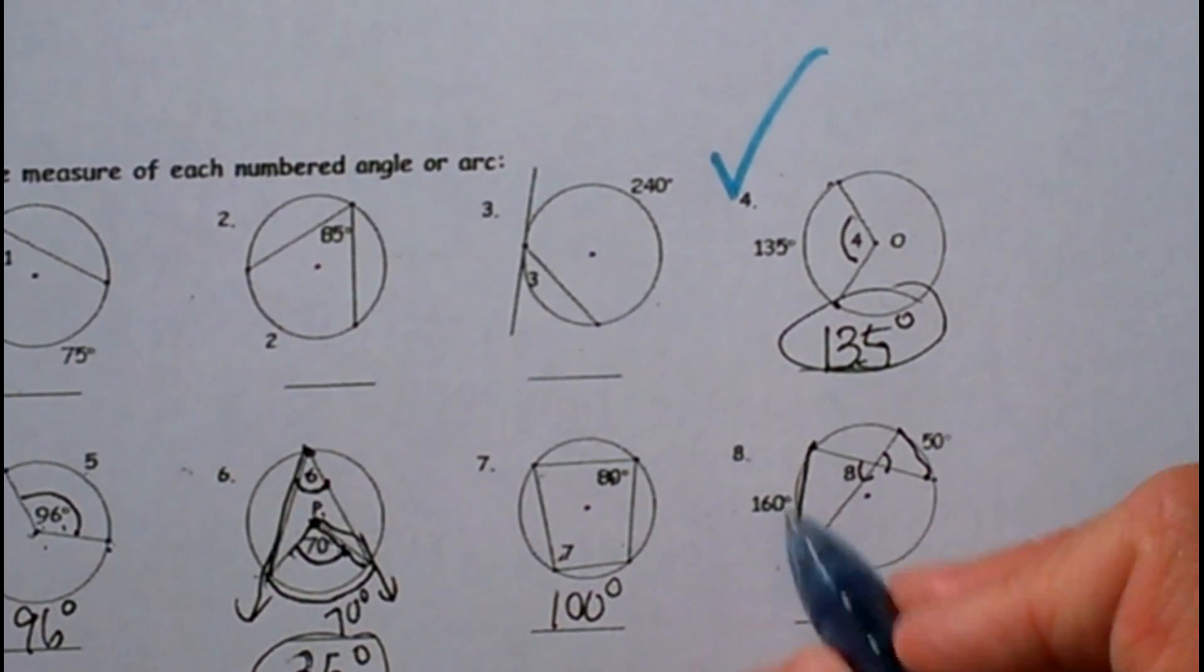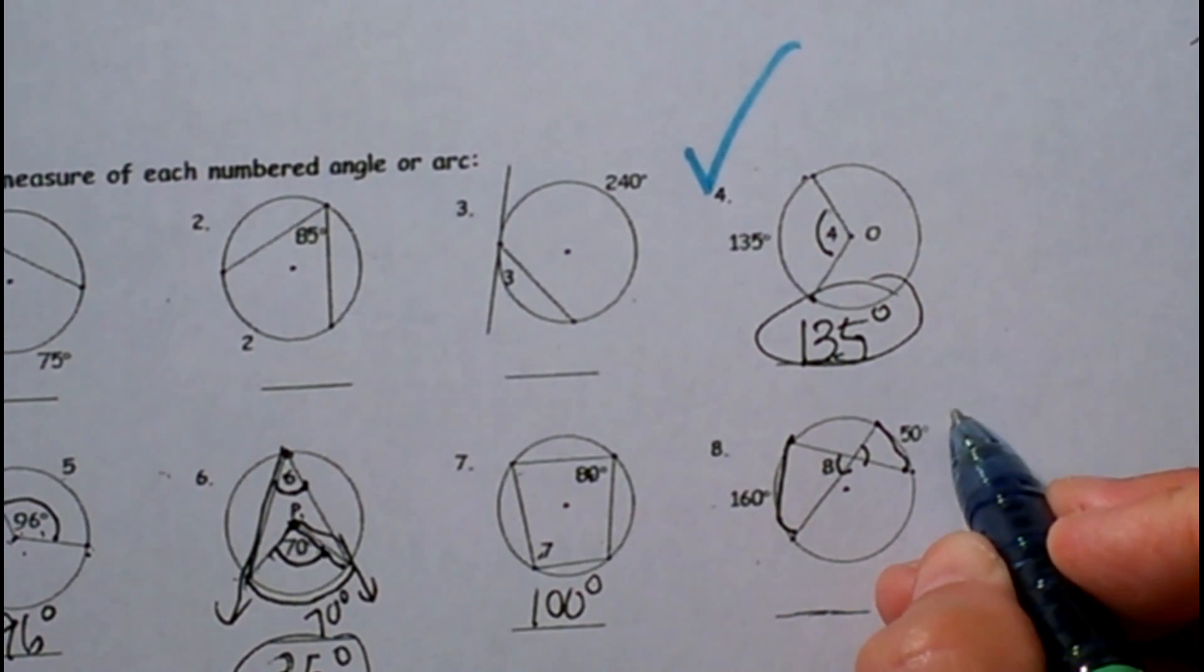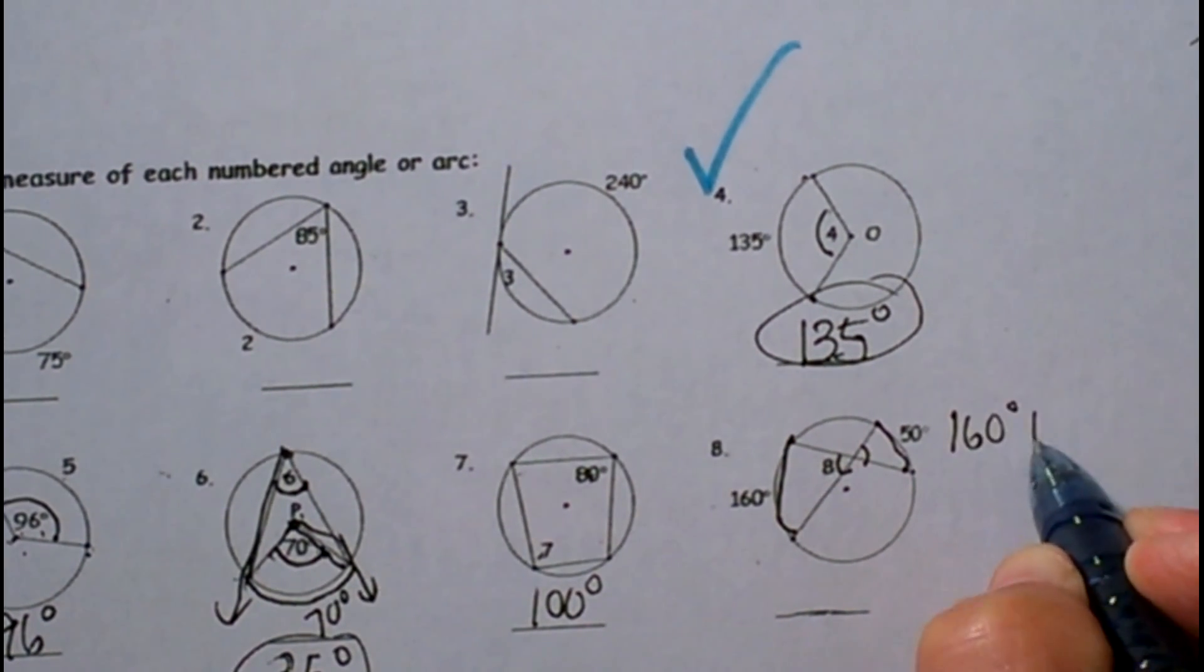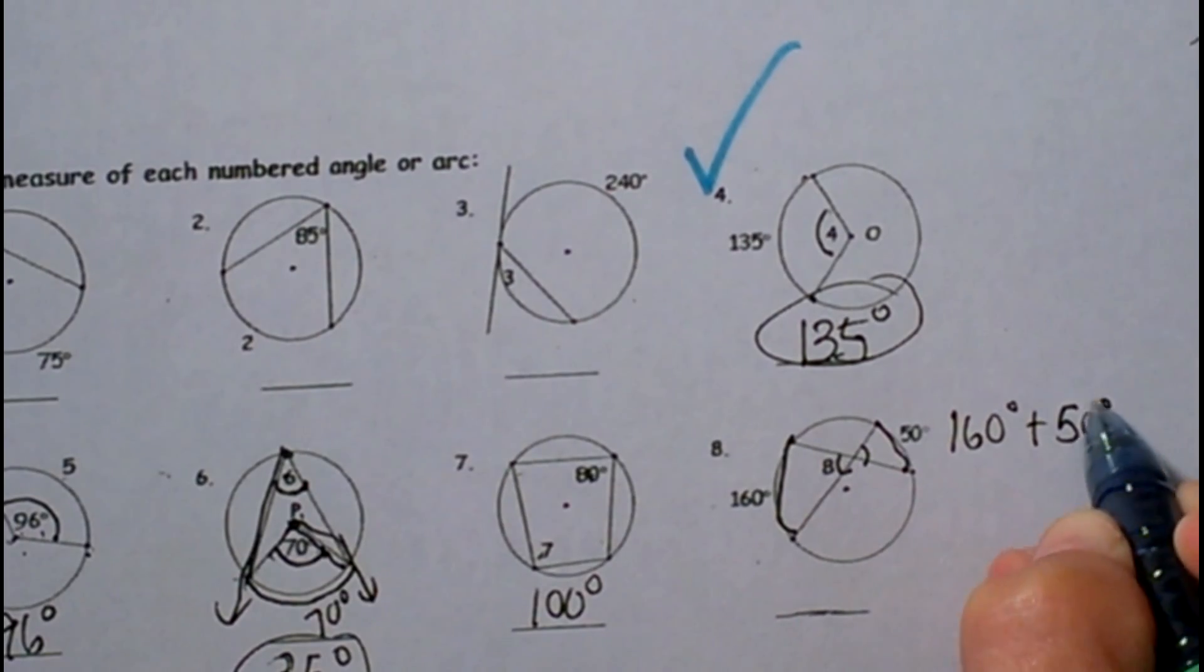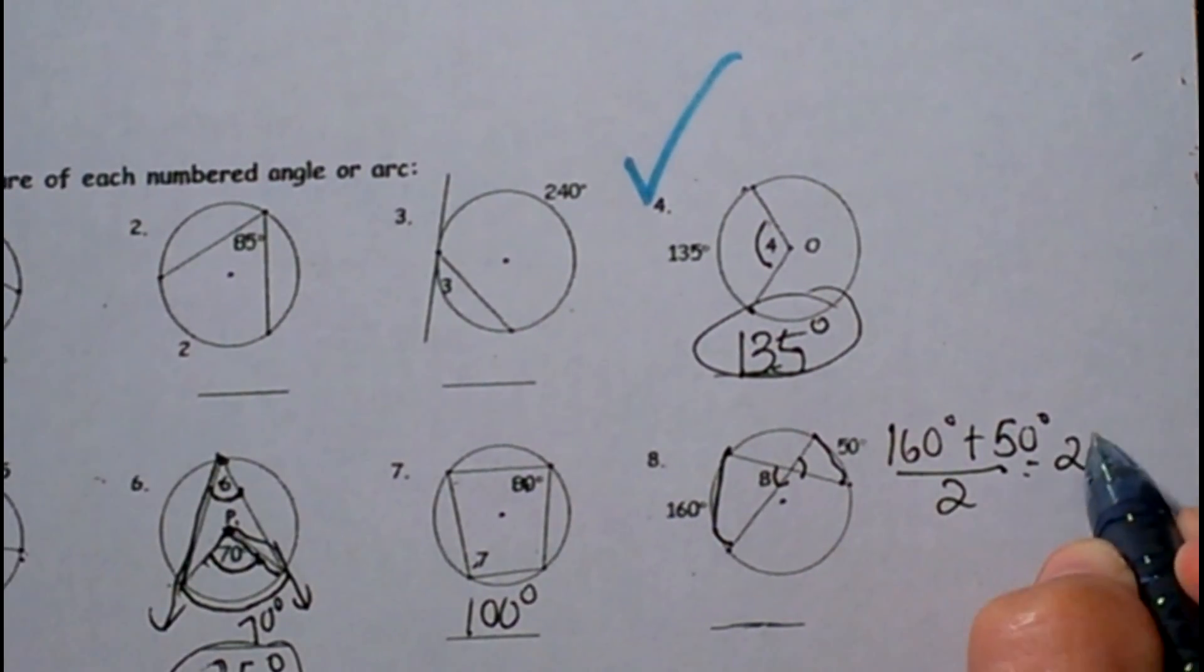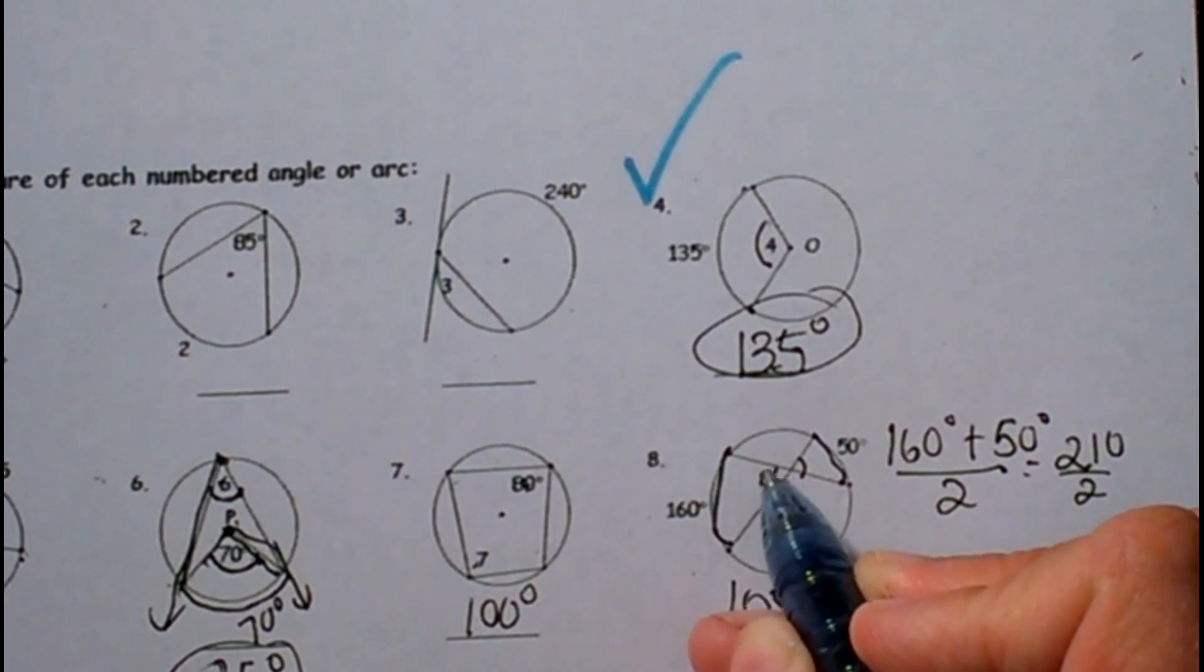So let's take our two intercepted arcs. You take 160 plus 50 and we divide by 2, so that takes us to what? 210 divided by 2 which is 105. So that means angle 8 is 105, and the angle that's a vertical angle is also 105.